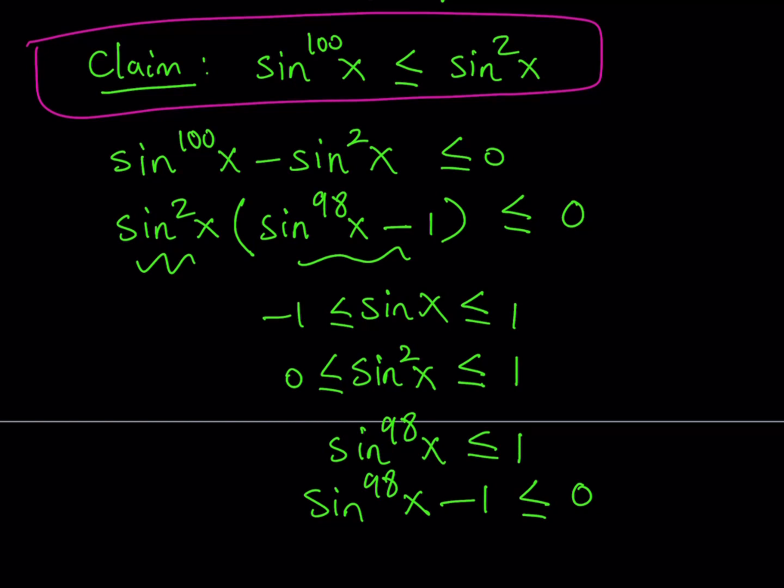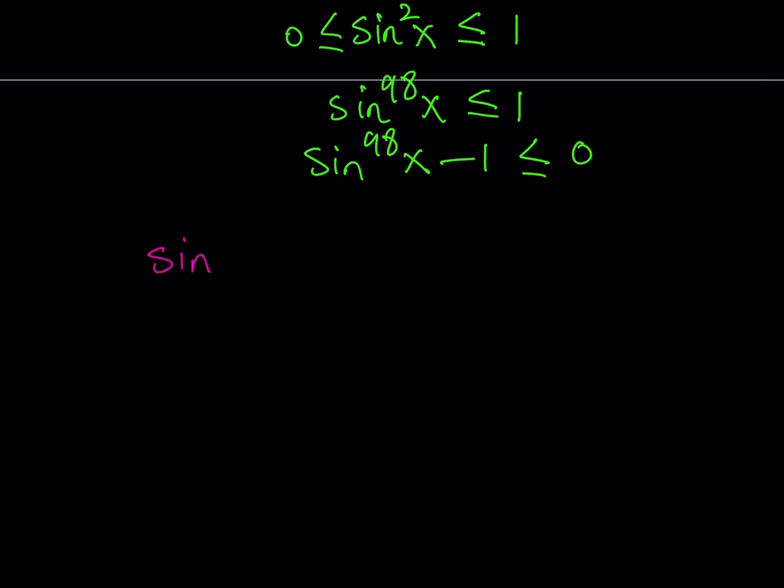Well, I can say the same thing for cosine because if you just go the same route, you can prove it similarly. Now, how does this help me solve this problem? It's still maybe not clear. So let's go ahead and write this inequality and the cosine version together and let's see what happens. That's going to be our next step. Now I have that sine x to the power 100 is less than or equal to sine squared x. I also have that cosine to the power 100 x is less than or equal to cosine squared x. Now, what do we do with these inequalities? We add them. Why? Because we know that sine squared x plus cosine squared x equals 1. So I want to be able to use this identity.